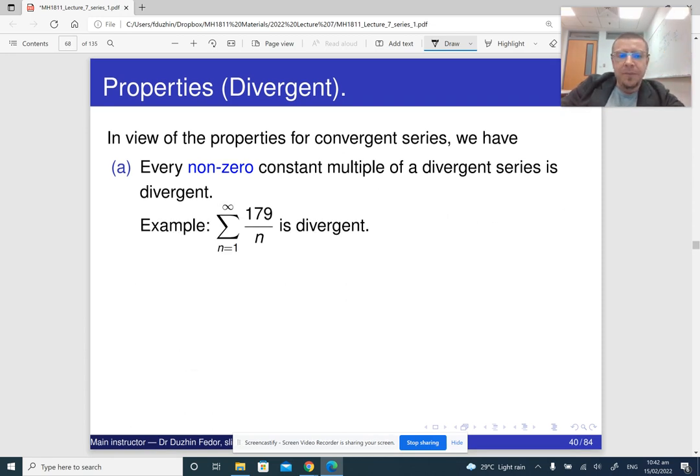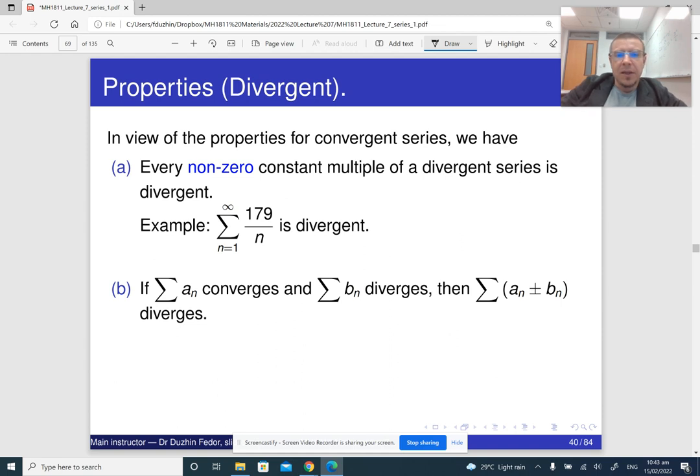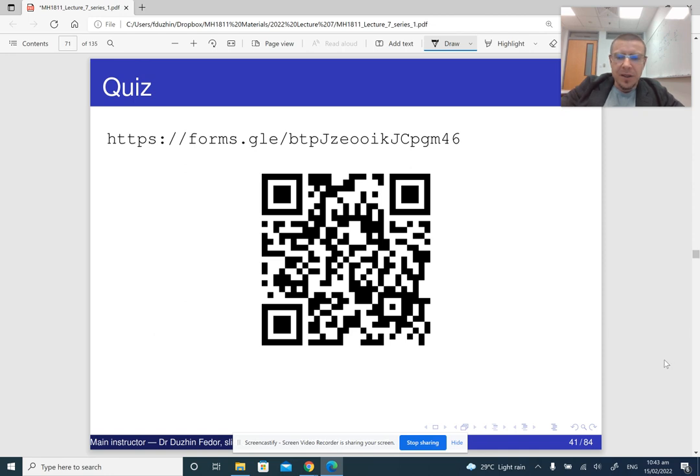Well, and so if you multiply, for example, all entries of a harmonic series by some number, then you will get a divergent series. Well, and then because of the same reason, the sum of a convergent and a divergent series is going to be divergent. So here is an example. So that's the end of the fifth part of the lecture.